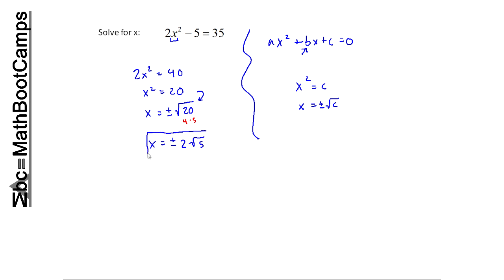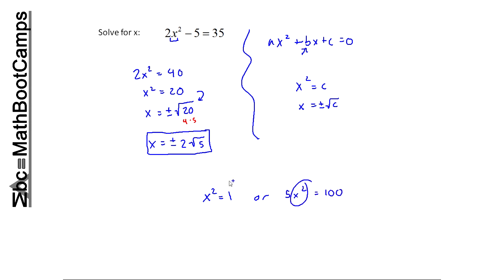It really is that simple when you use the square root property. It doesn't always come up. What I look for when deciding to use this method is a single x squared term — so even an equation like x squared equals 1, or 5x squared equals 100. Anything where I have just a single term squared, I'm going to use this property.